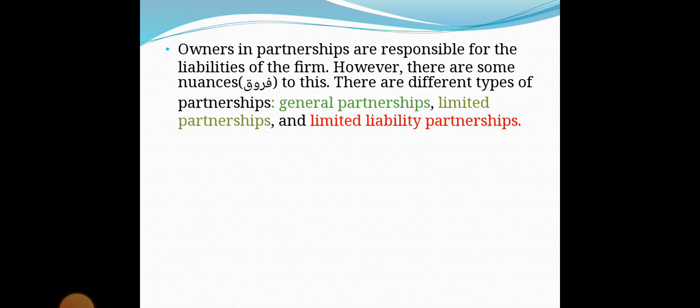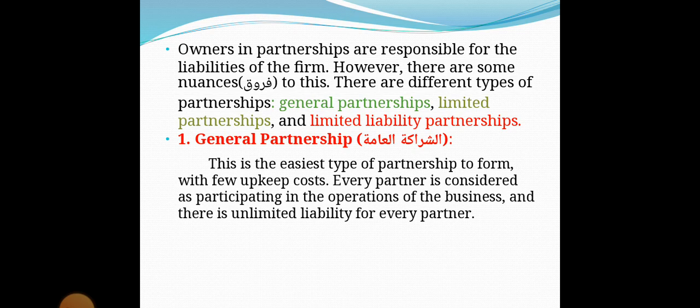The first type is general partnership. The general partnership is the easiest type of partnership to form, with few upkeep costs. Every partner is considered as participating in the operations of the business and there is unlimited liability for every partner. يعني الشراكة العامة هو أسهل نوع من الشراكة الذي يتم تكوينه، ويعتبر كل شريك مشاركاً في عمليات الشركة، كما أن هناك مسؤولية غير محدودة على كل شريك.